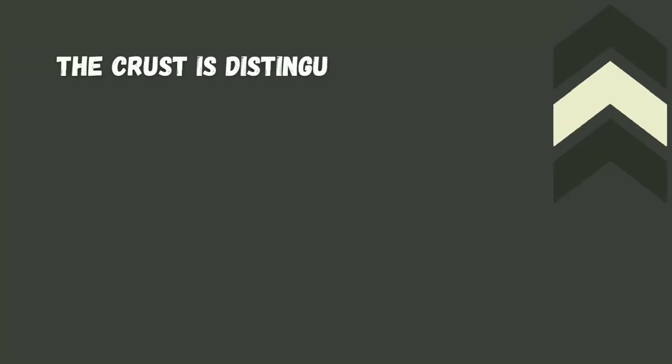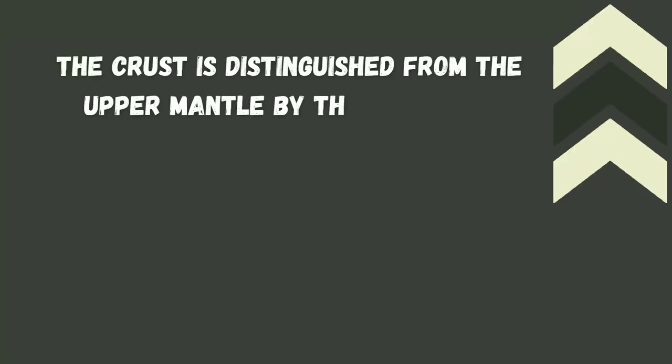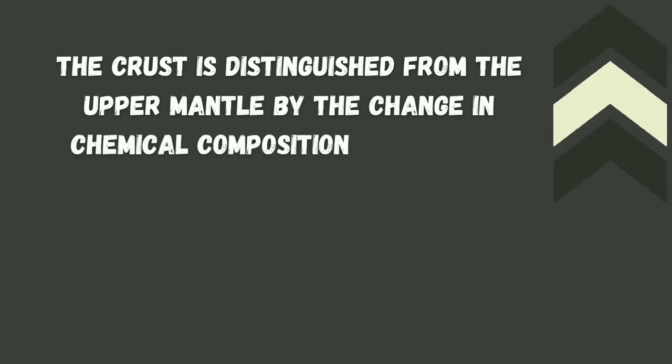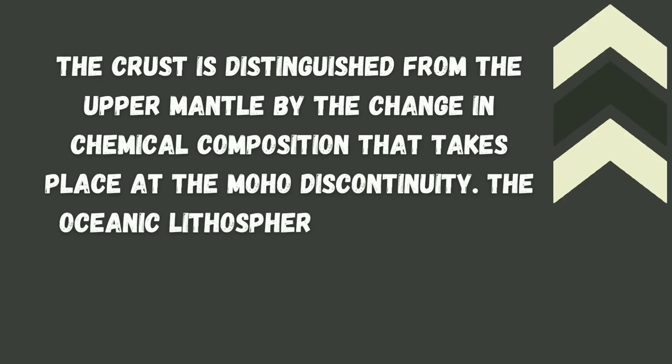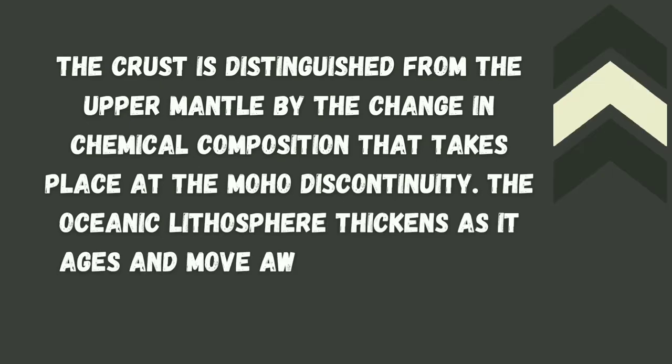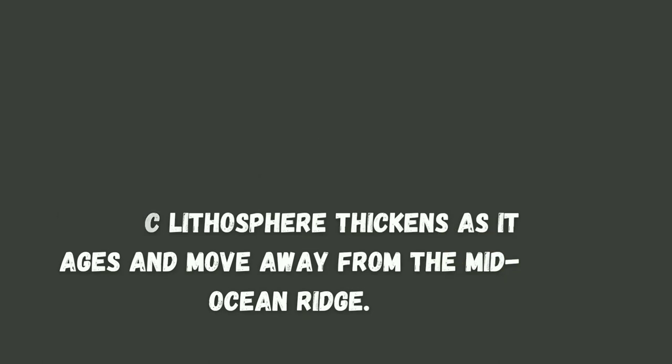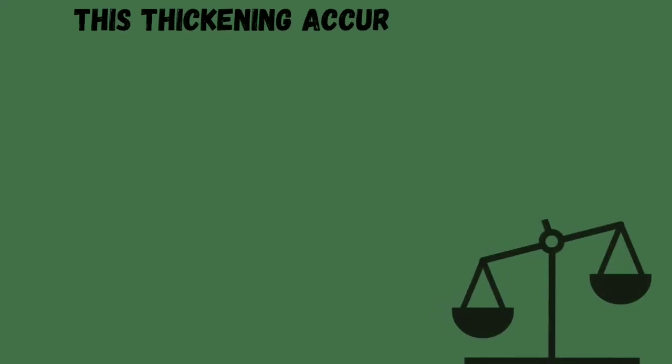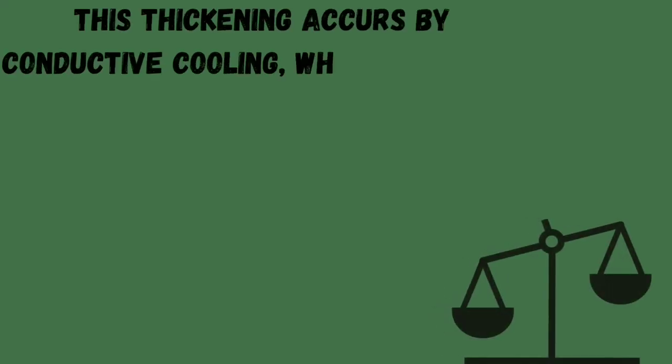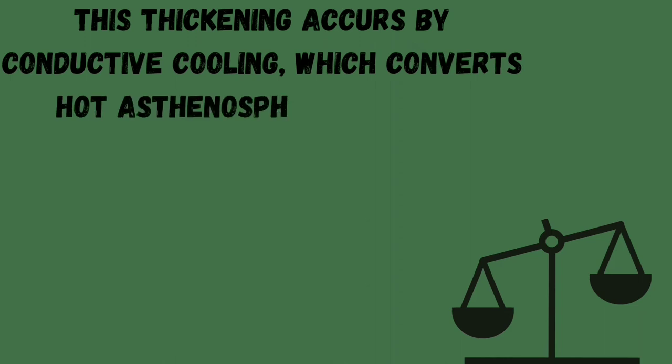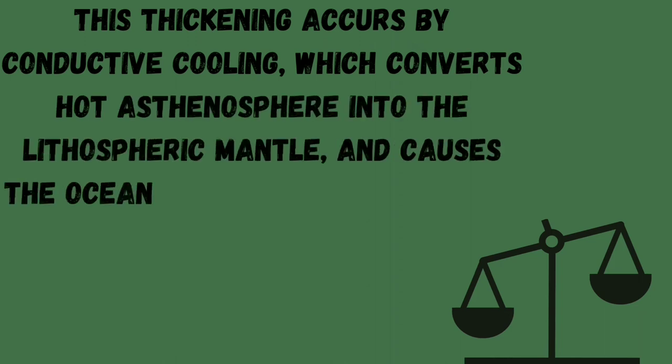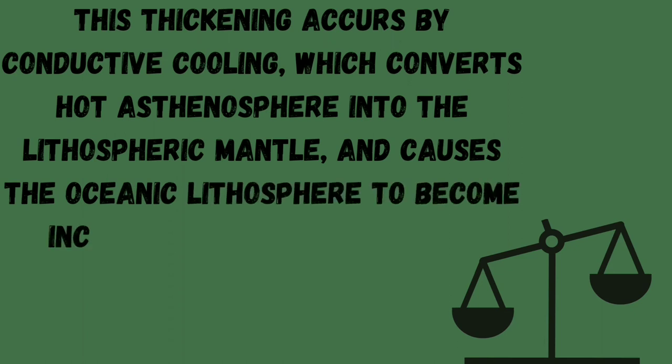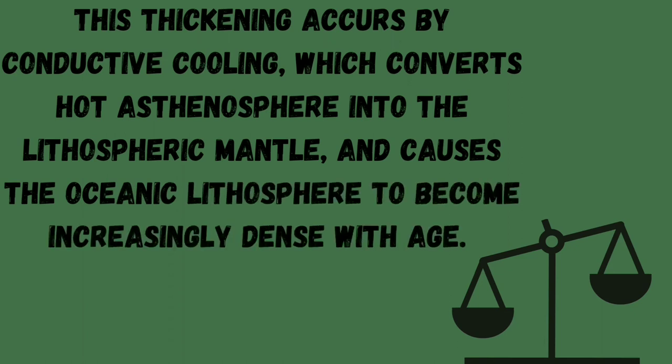The crust is distinguished from the upper mantle by the change in chemical composition that takes place at the Moho discontinuity. The oceanic lithosphere thickens as it ages and moves away from the mid-ocean ridge. This thickening occurs by conductive cooling, which converts hot asthenosphere into lithospheric mantle and causes the oceanic lithosphere to become increasingly dense with age.